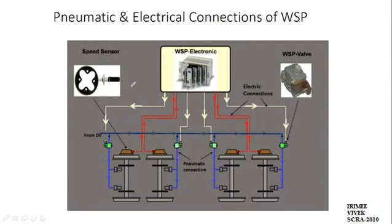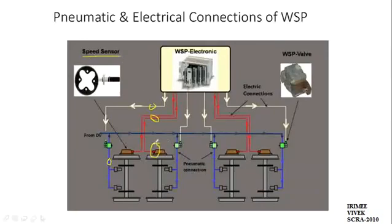This is the circuit diagram of the wheel slide protection system. The red and white lines are electrical connections, while the blue lines are pneumatic connections. The speed sensors are provided one per axle at the outer box cover. The speed sensor gives unidirectional input to the microprocessor control unit.